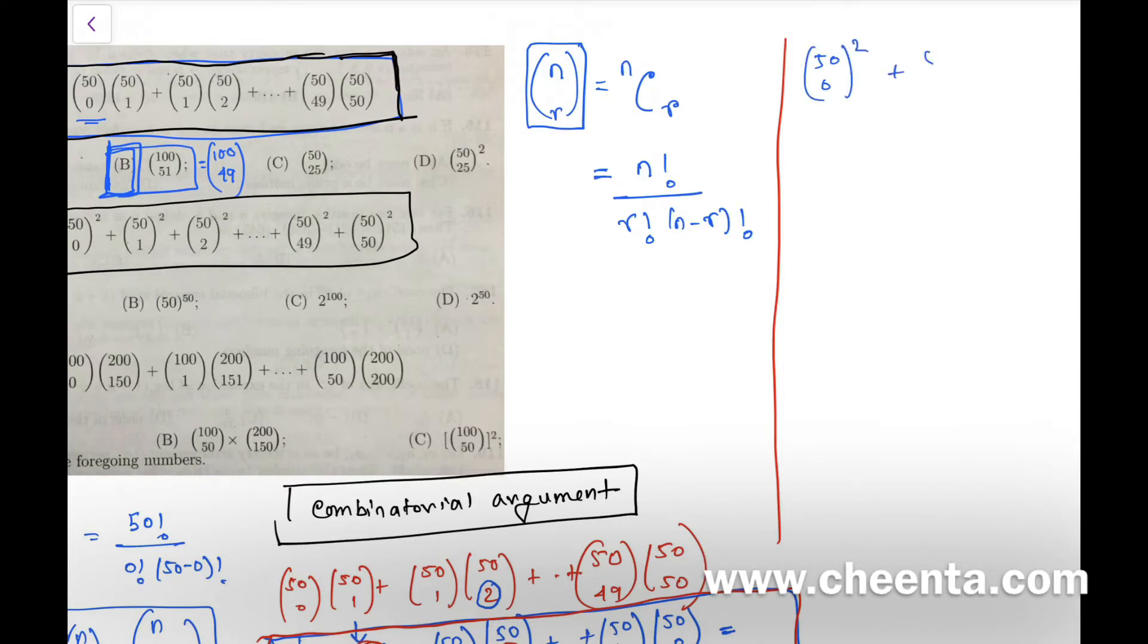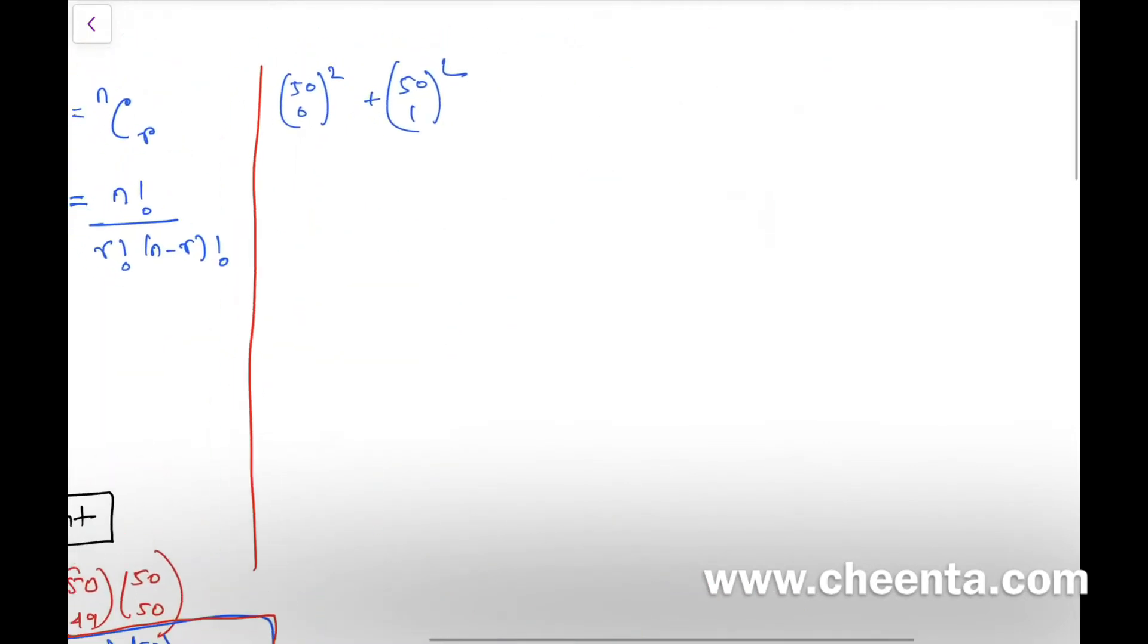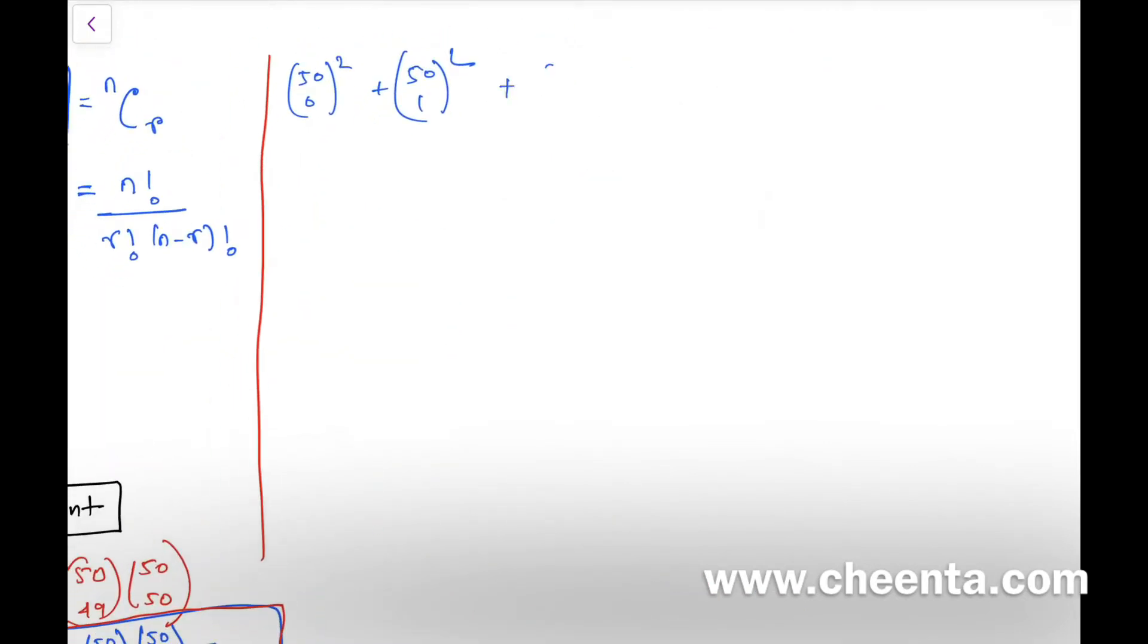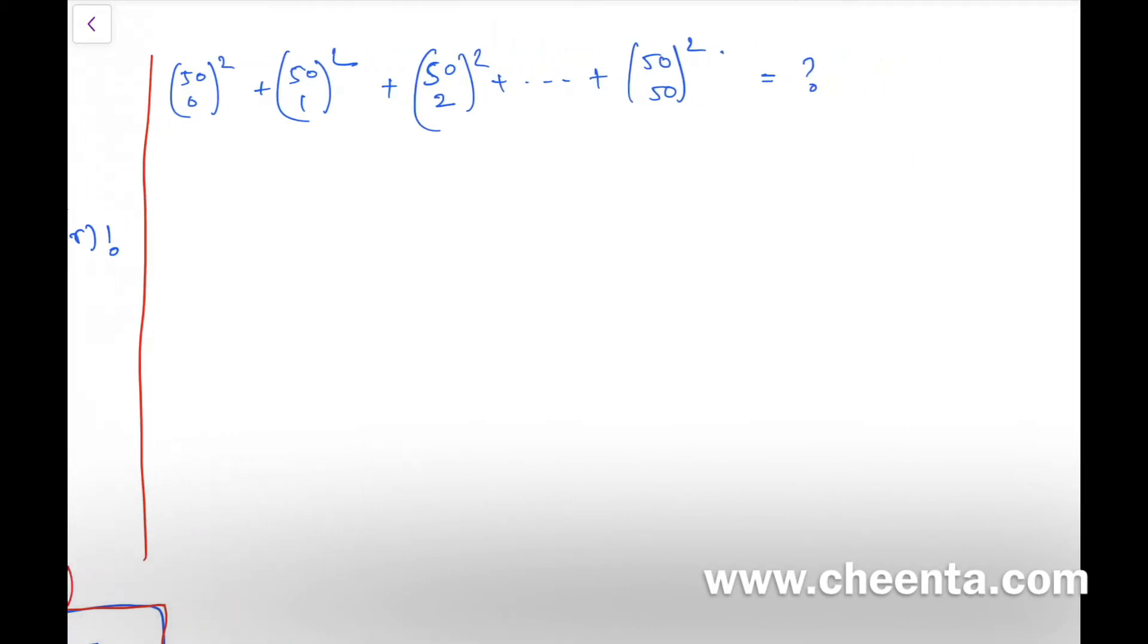Let's make a little space here. We have (50 choose 0)² + (50 choose 1)² + (50 choose 2)² + (50 choose 3)² up to (50 choose 50)². So we want to find out the value of this sum, and as usual we will not be computing the actual value—we will be using some sort of an argument to do this.